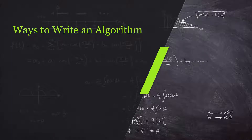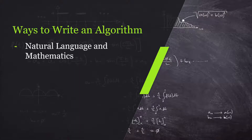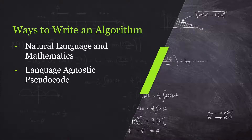Now that we know what algorithms are and why they're important, how do we go about writing them? There are three common ways. We have the natural language and mathematics way. We have pseudocode, which is very similar to natural language and mathematics but looks a lot more like code — it might even have some flavor of the language you're used to, but at the end of the day it's still not compilable code. And then the third way, which is a little more graphical, are flowcharts. You're going to see various ways of presenting and crafting algorithms as we go through these videos, and we will talk more about flowcharts at a later point.